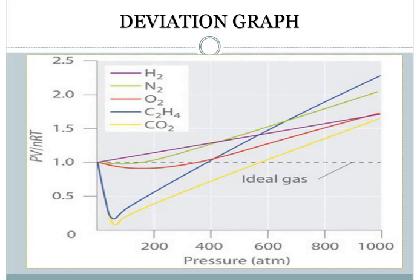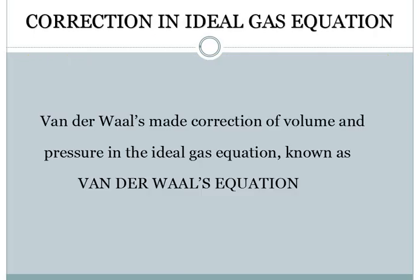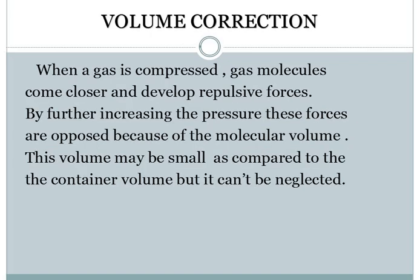Van der Waals made corrections to the ideal gas equation by working on two factors: correction in volume and correction in pressure. The ideal gas equation PV = nRT is then changed to Van der Waals' equation. First we will study the volume correction — what it is and how he corrected the volume.